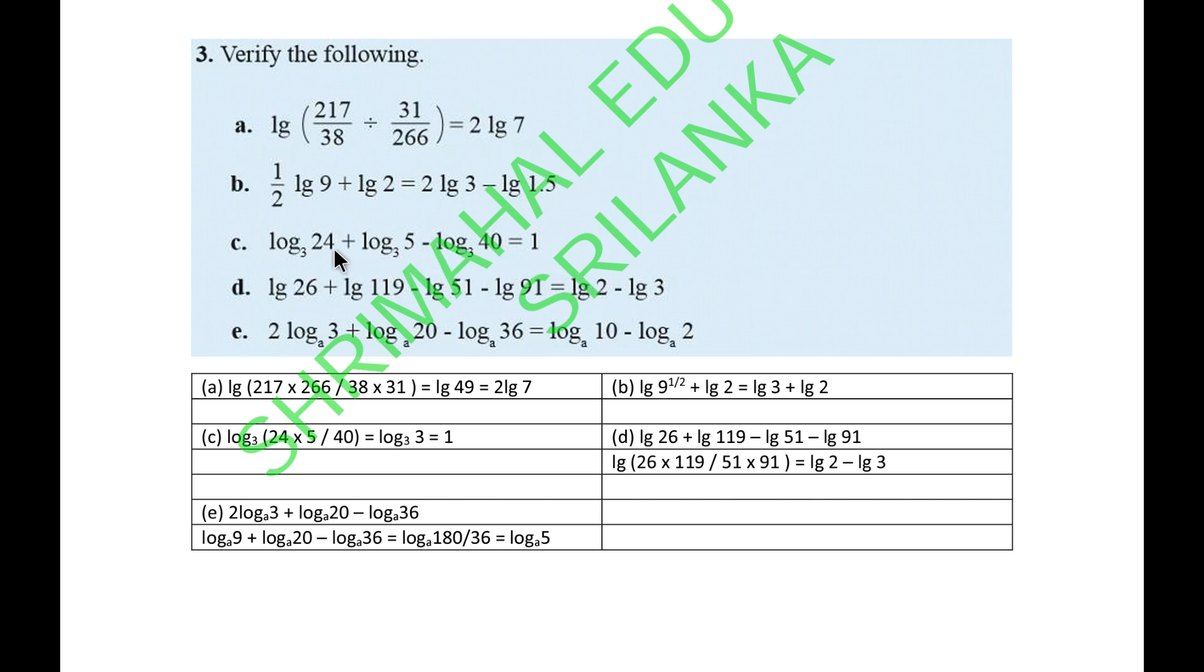Here next one, log base 3 of 24 plus log base 3 of 5 minus log base 3 of 40 equals 1. Log base 3, 24 and 5 you multiply and divide by 40. You get log 3 of 3, so that's 1. This is accurate, it proves.